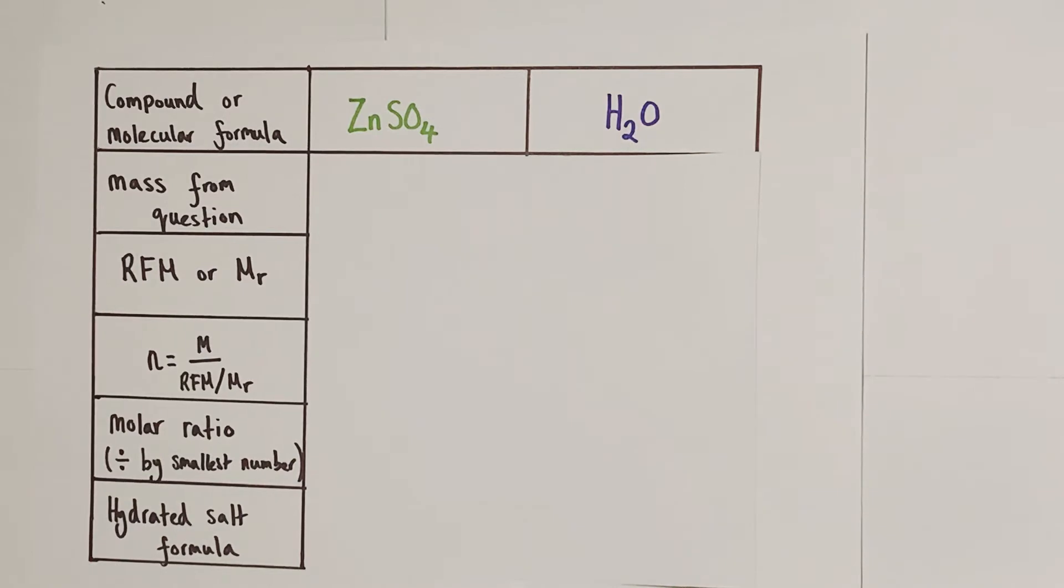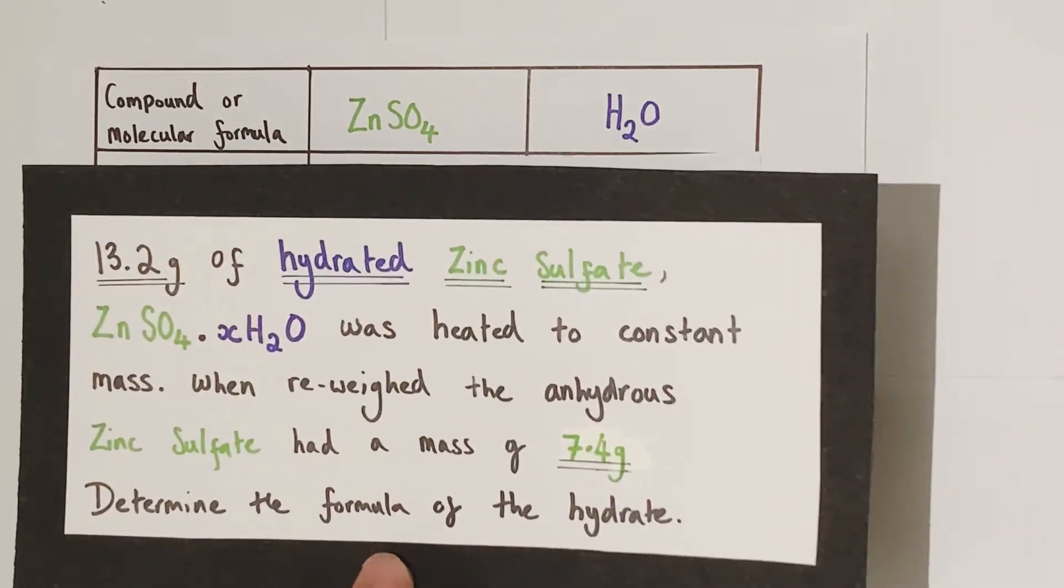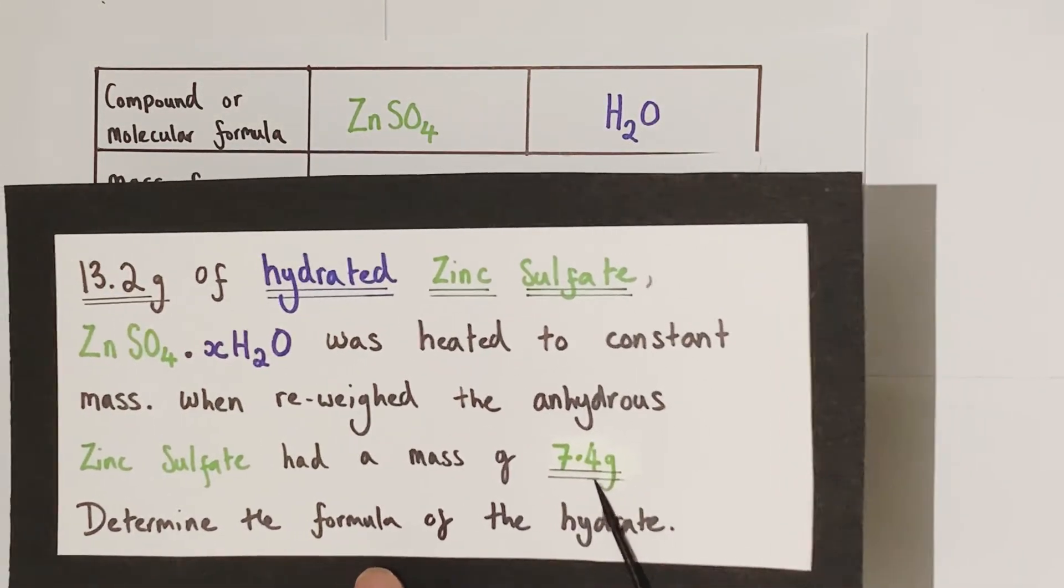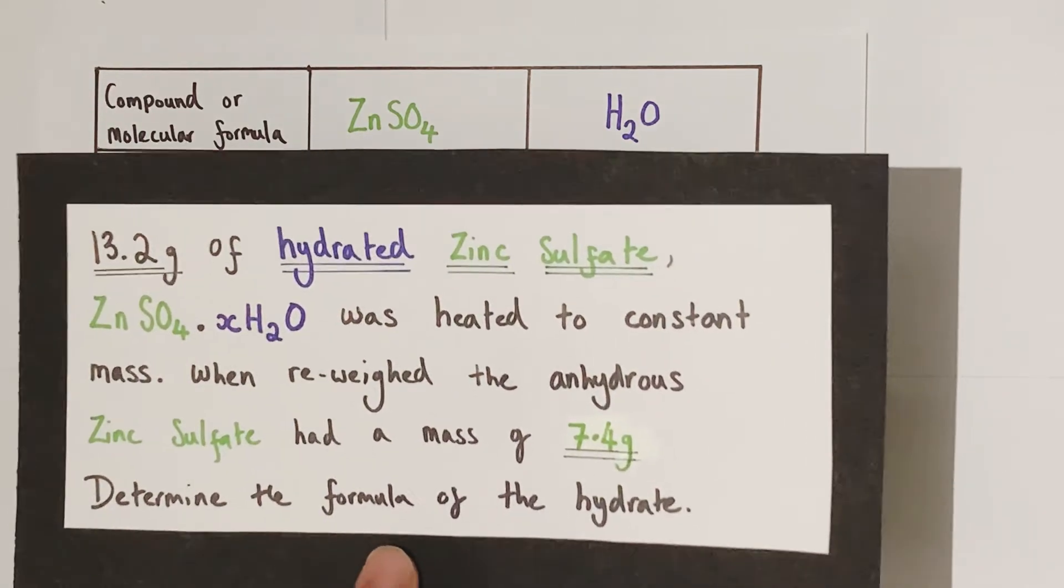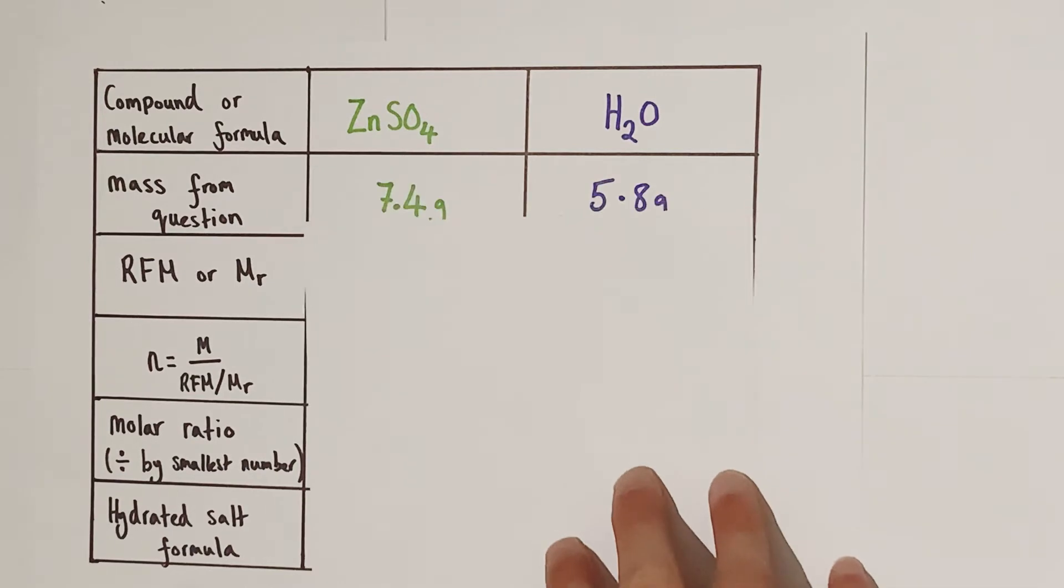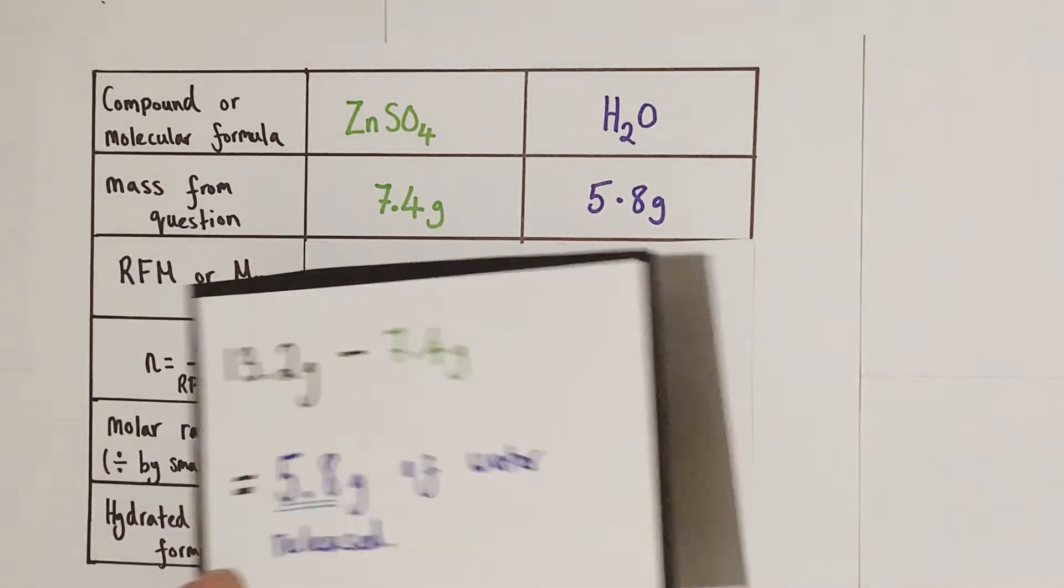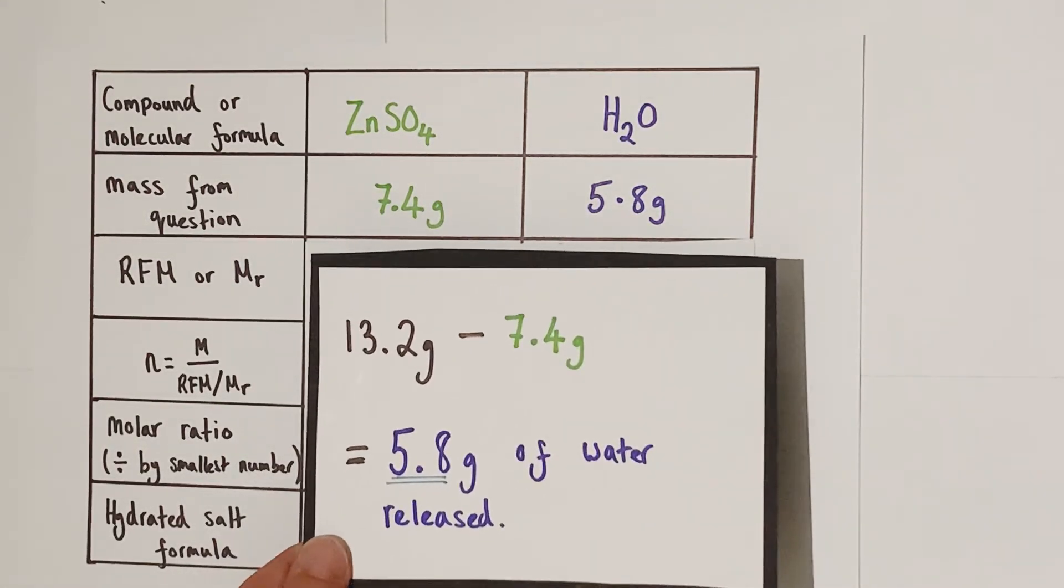The next part of the empirical formula grid is as standard, we write down the mass from the question. Well if we look at the question we know that at the end of the experiment there was 7.4 grams of anhydrous zinc sulfate remaining, so we know the mass of zinc sulfate ZnSO4 is going to be 7.4 grams, and we also now know that we have 5.8 grams of water being driven off based on our calculation from the previous section.